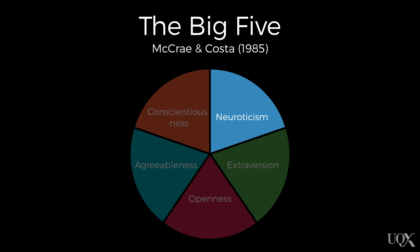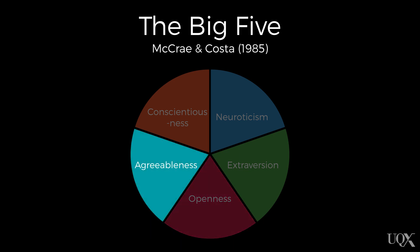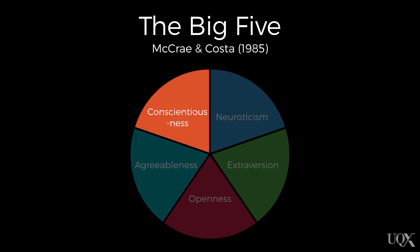The five dimensions are: neuroticism, described as tense and moody — and neuroticism is a good predictor of a range of mental illnesses; extraversion, described as social and lively; openness, which is intellectually curious and unconventional; agreeableness, friendly and easy to get along with; and conscientiousness, careful and responsible.